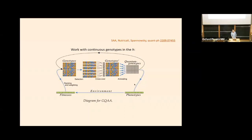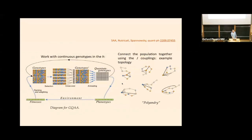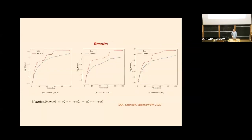This is what we call genetic quantum annealing — it's got the same structure and it's trying to take advantage of the possibility of quantum tunneling on the quantum annealer. Something else you can do is couple the individuals together: take the fittest individual and couple it through its J couplings to the other individuals in the population. We call this 'polyandry' — it does appear to give some advantage.